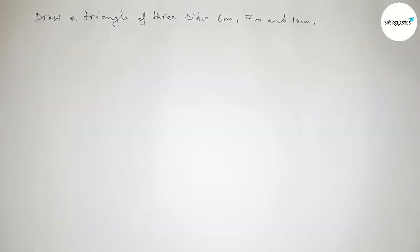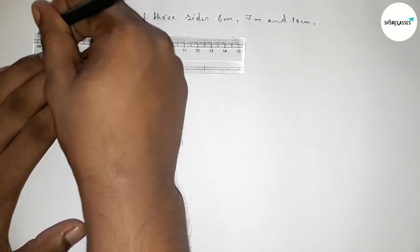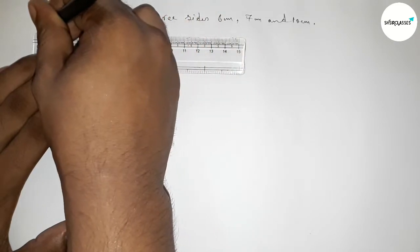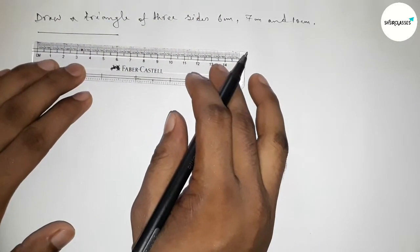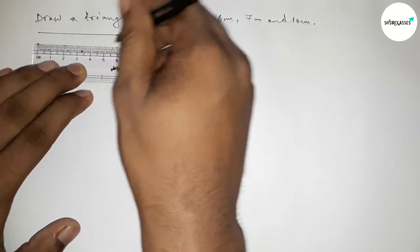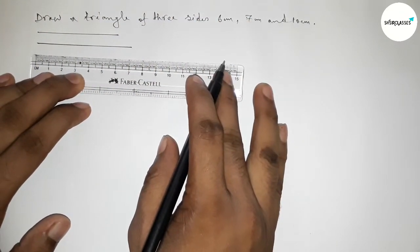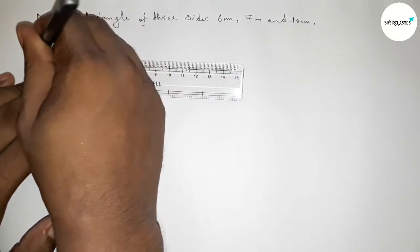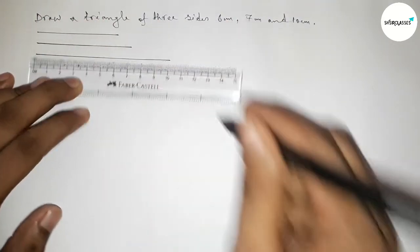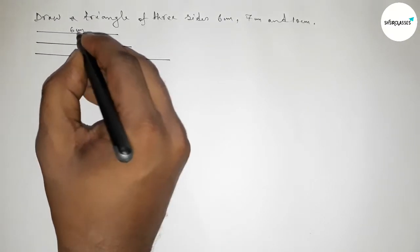First of all we have to draw the three sides. Drawing here a line of length 6 centimeter, then drawing another line of length 7 centimeter, and last drawing here a line of length 10 centimeter. So this one is 6 centimeter, this one is 7 centimeter, and this one is 10 centimeter.